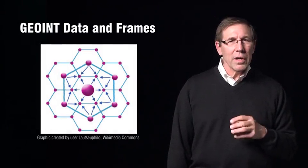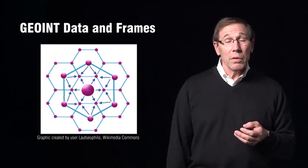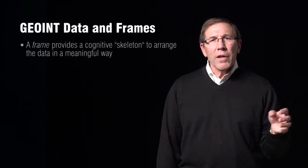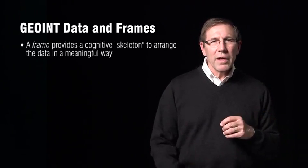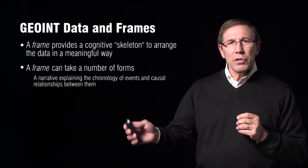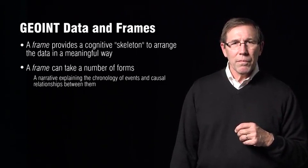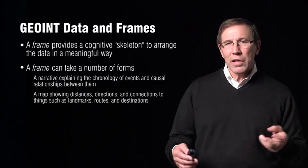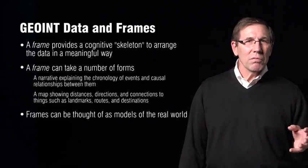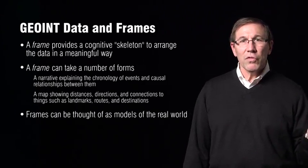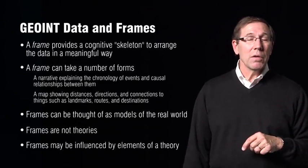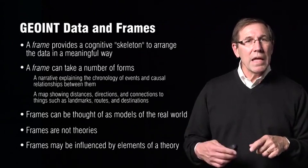I'm showing you a picture of the central place theory. If you've ever flown across the central plains of Germany and looked out the window of your aircraft, you might see the cities and towns configured similar to that. A frame provides us a cognitive skeleton — it helps us to arrange the data in a meaningful way. A frame can take a number of different forms. It can be a narrative — a chronology of events and causal relationships between them. A frame can also be a map, with distances, directions, and connections. It helps us organize things, explains, and gives us a story of what's happening. Frames can be thought of as models or generalizations of the world, like a map. However, frames are not theories, though a frame may be influenced by a theory — for example, central place theory may influence how we frame something.